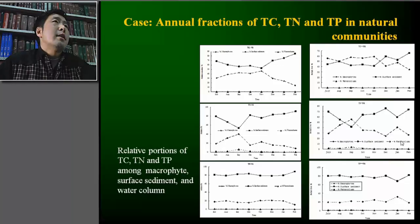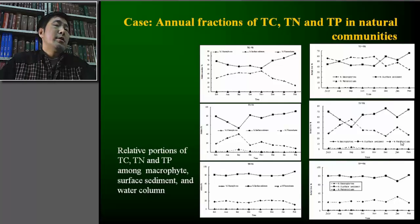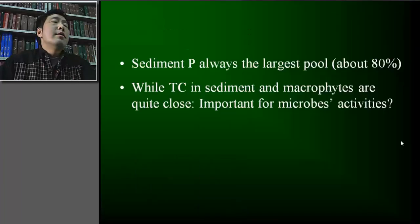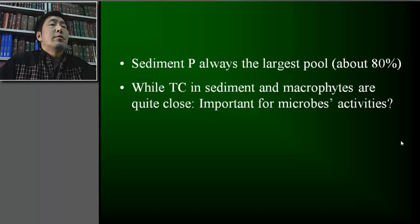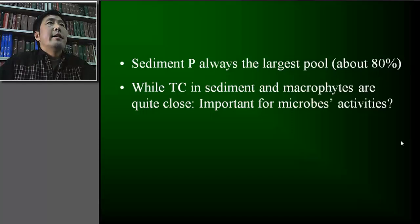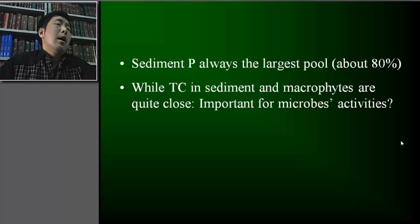This work was done in the shallow lakes along the Yangtze River. This slide shows the relative proportions of total carbon, total nitrogen, and total phosphorus among the macrophyte community, surface sediment, and the water column. From these studies, we can clearly see that sediment phosphorus is always the largest phosphorus pool — about 80% or more of phosphorus is retained in the sediment. Macrophytes are the second largest phosphorus pool in these natural systems.